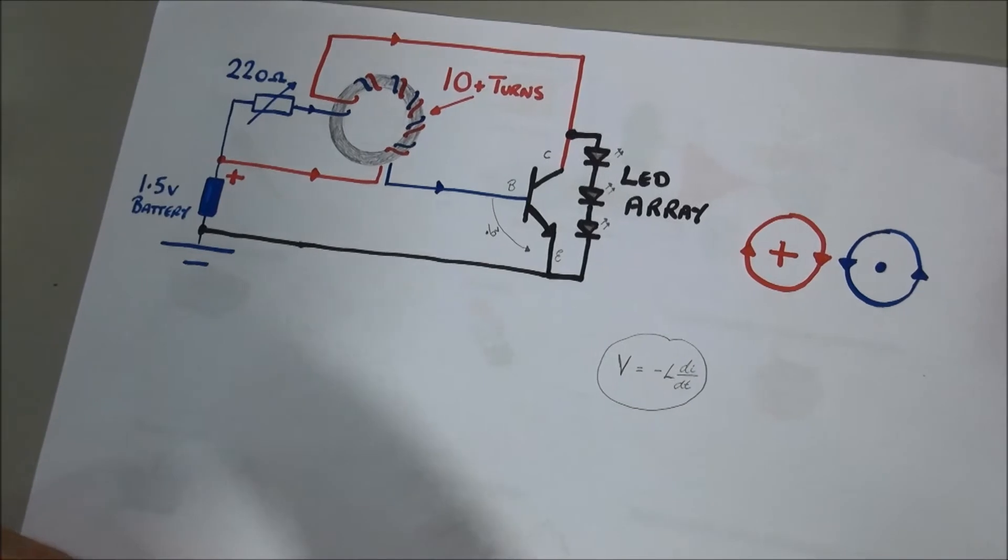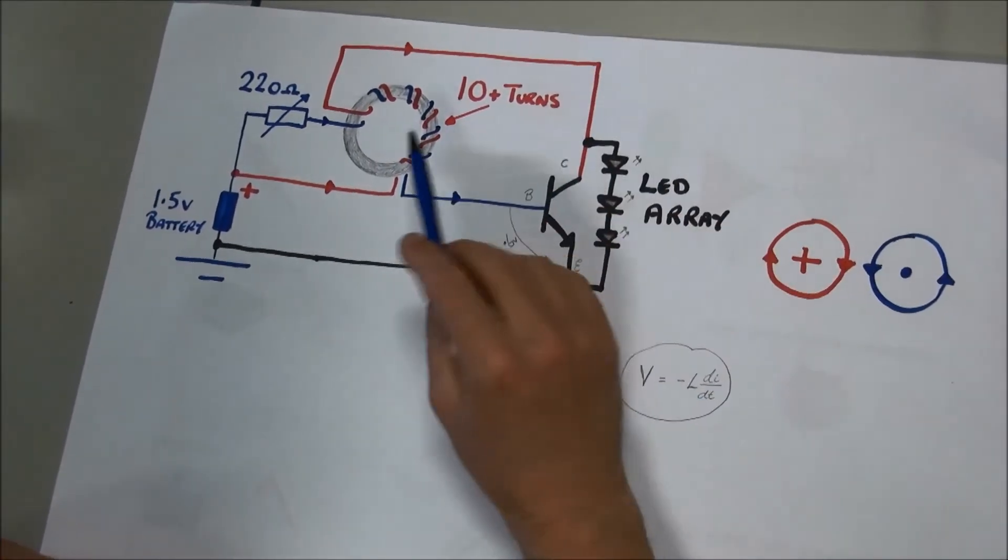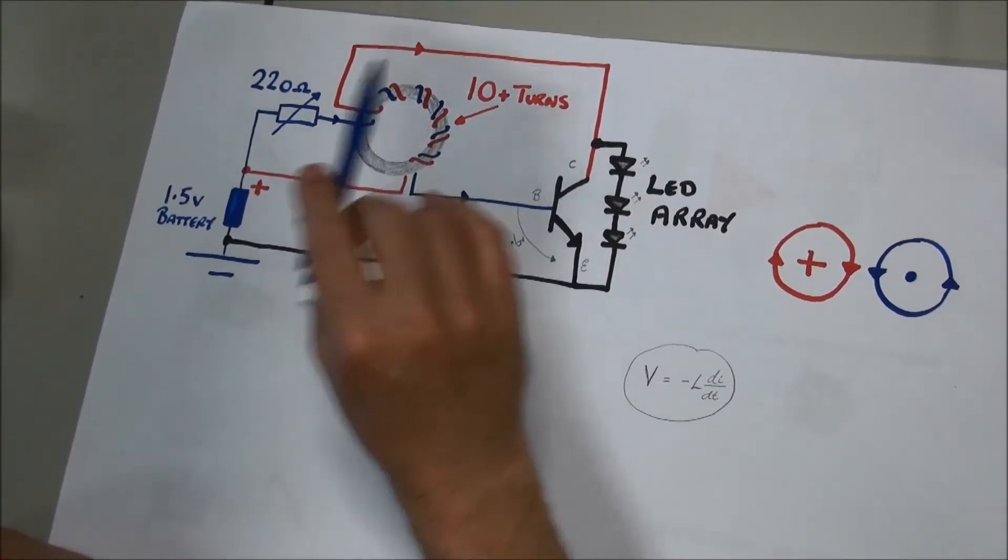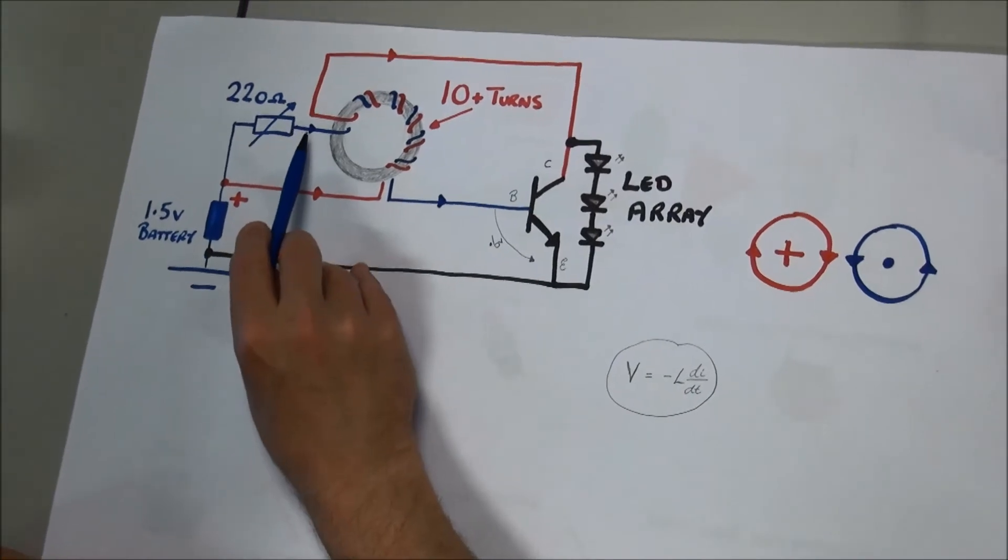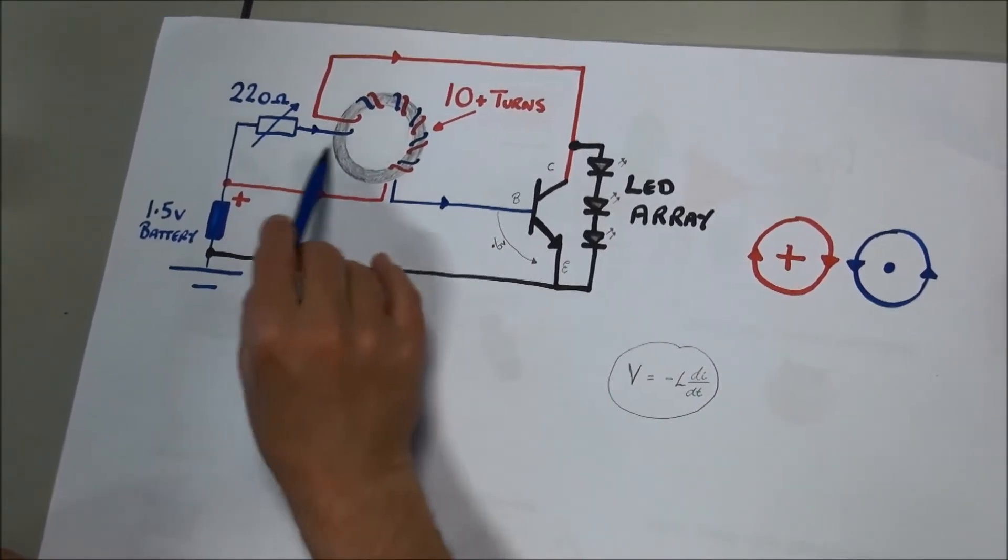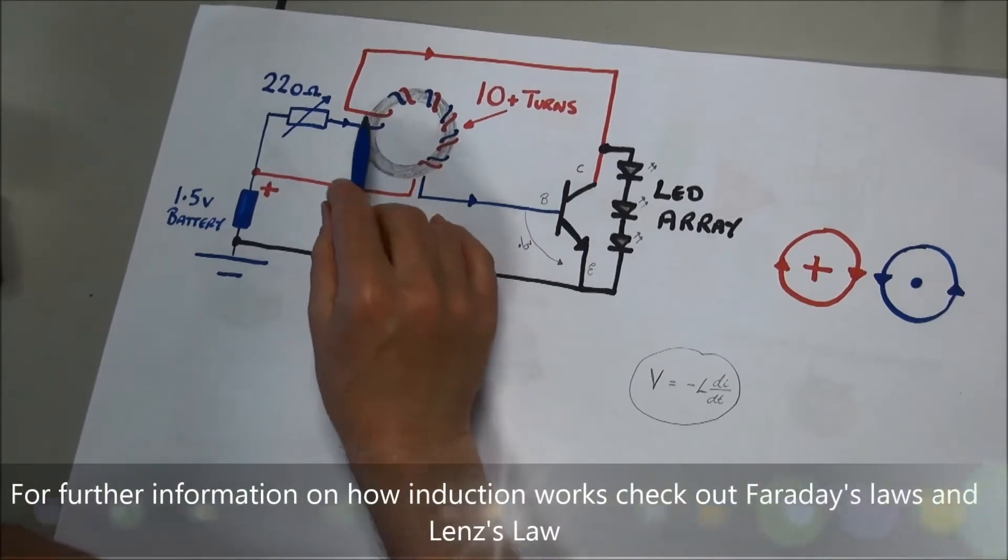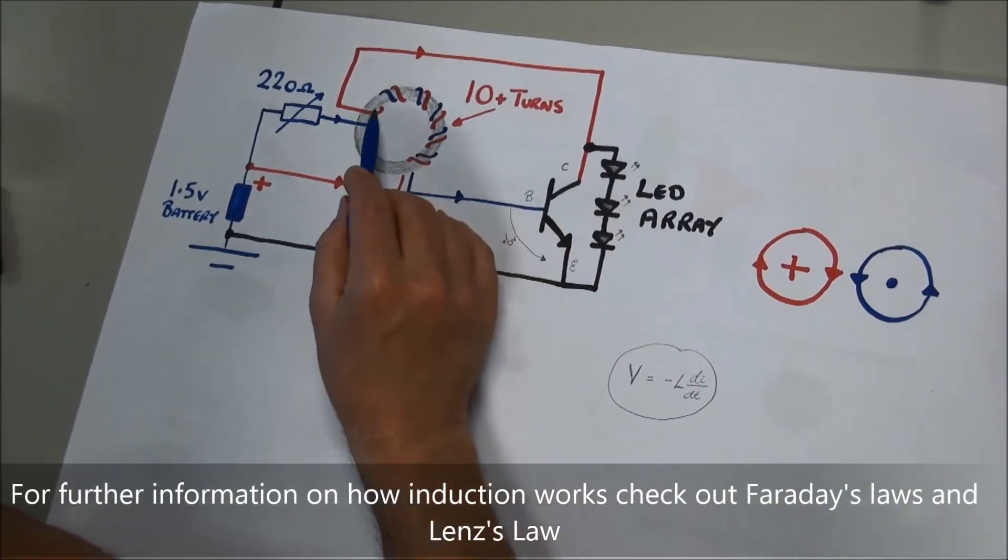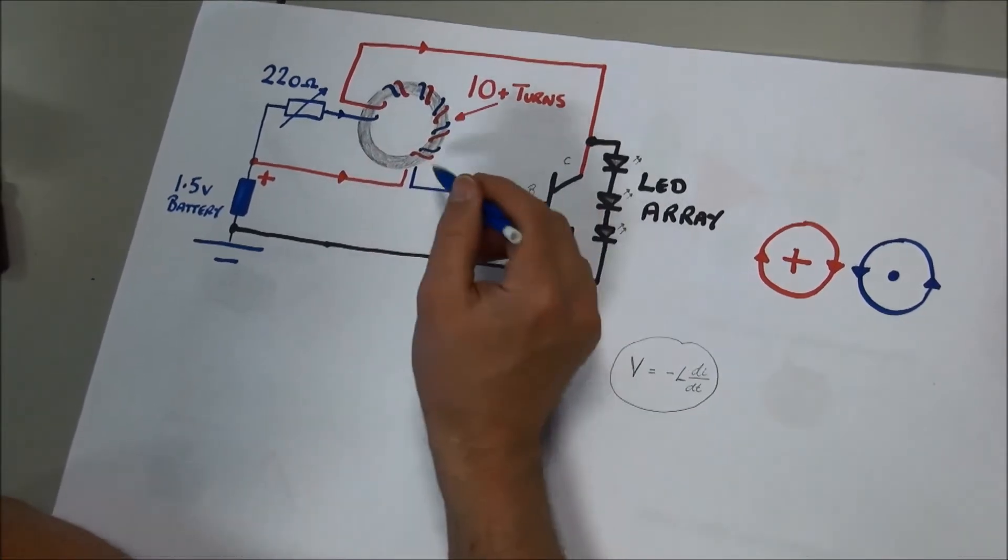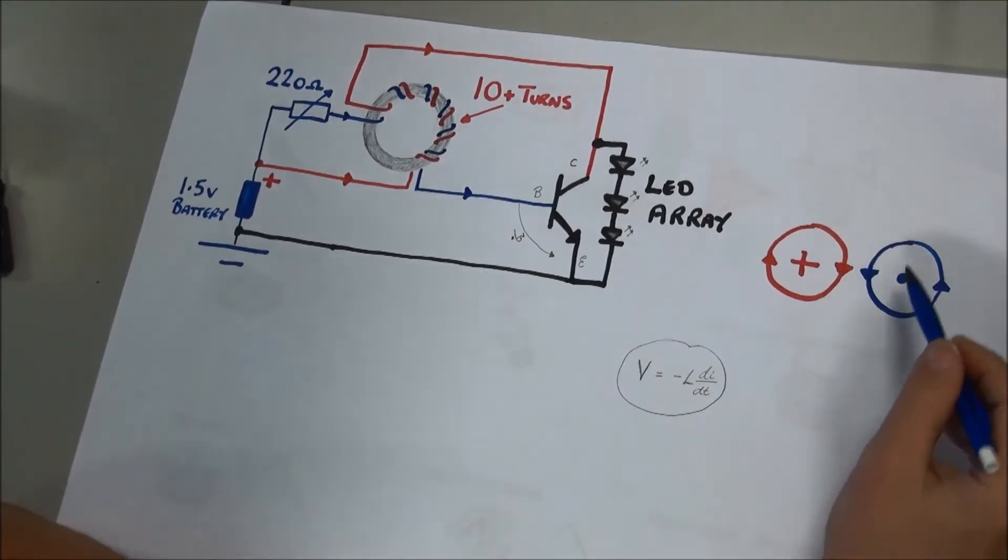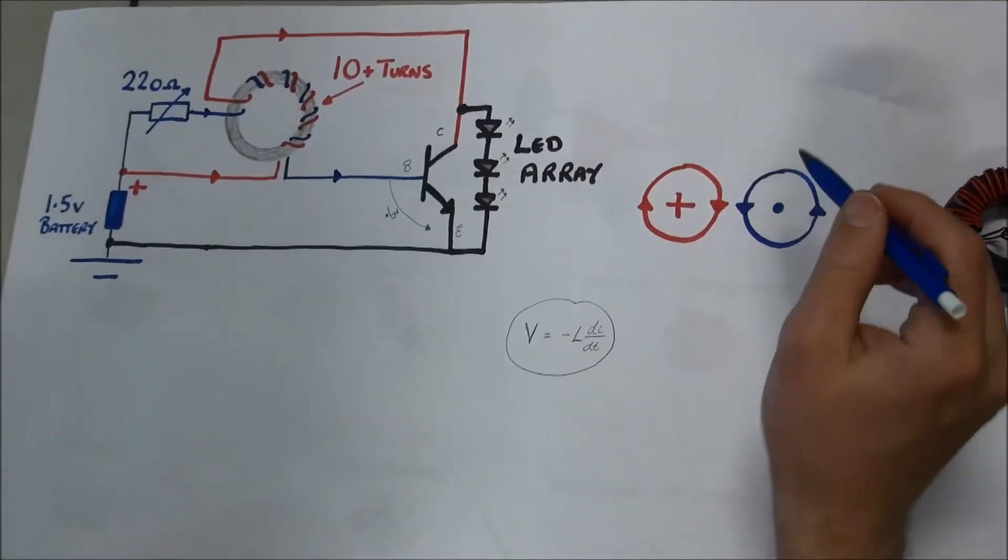What happens is current flows through the coil to the base, and current also flows through the collector. The collector current is much larger than the base current, and we've got a cross-sectional area here of both of these coils.